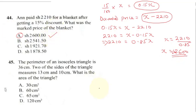Now let's solve 45. Question 45 says the perimeter of an isosceles triangle is 36 cm. Two of the sides of the triangle measure 13 and 10 cm. What is the area of the triangle? I'm going to draw my triangle. Remember your isosceles triangle has two sides equal. You said two of the sides measure 13 and 10.